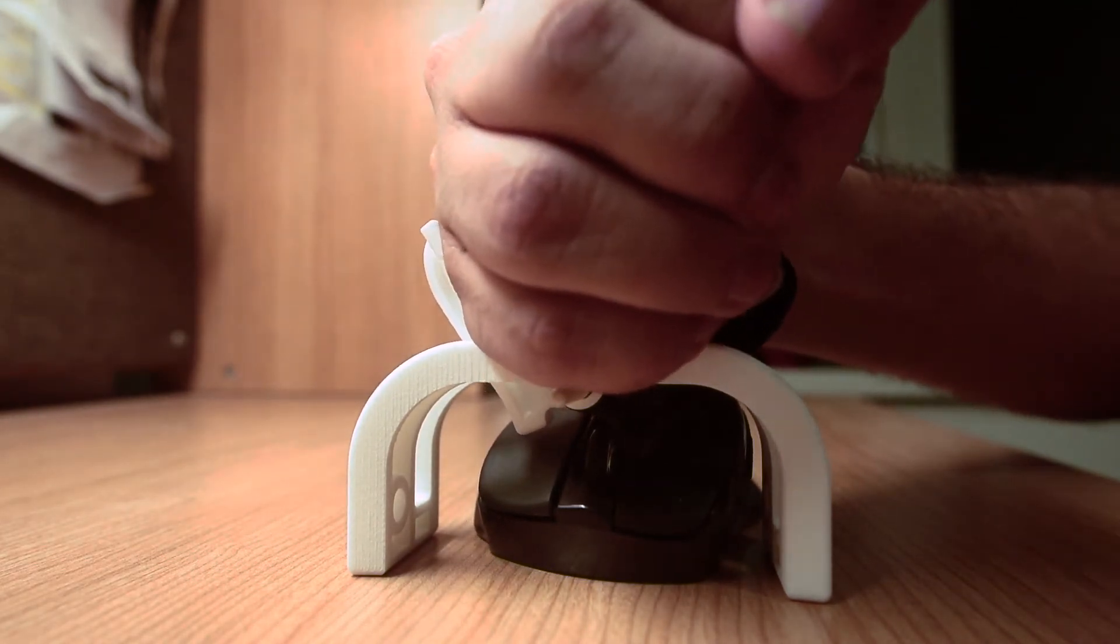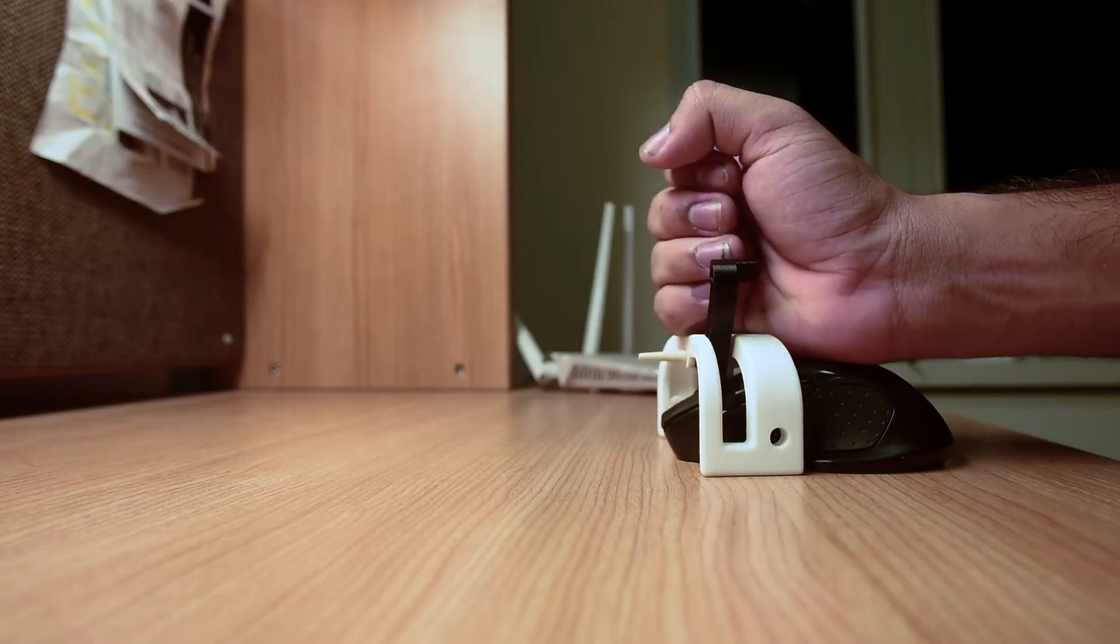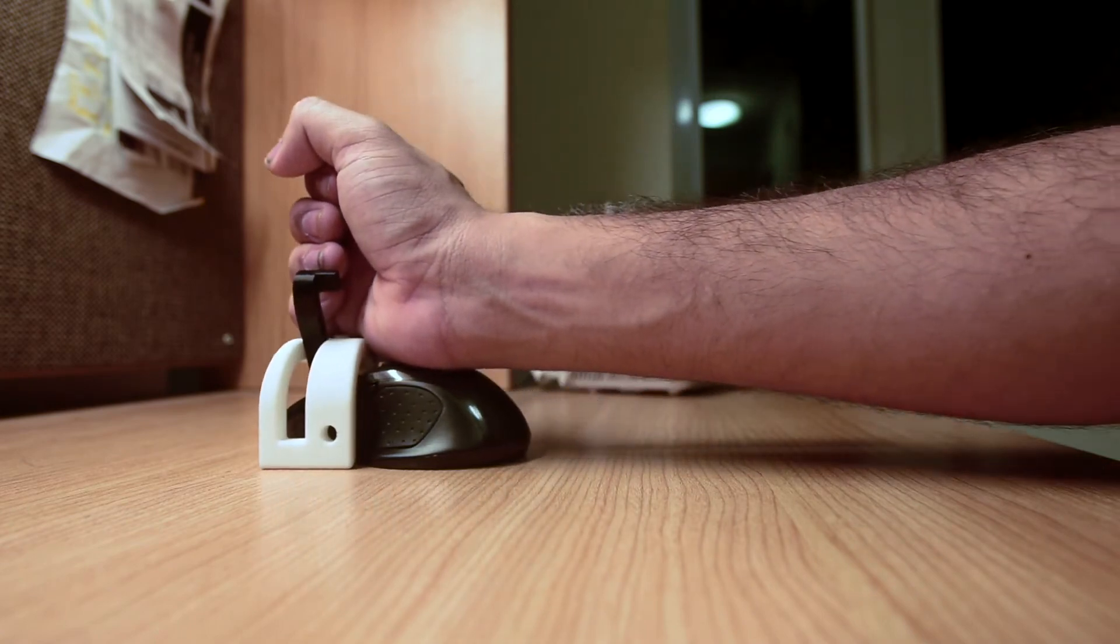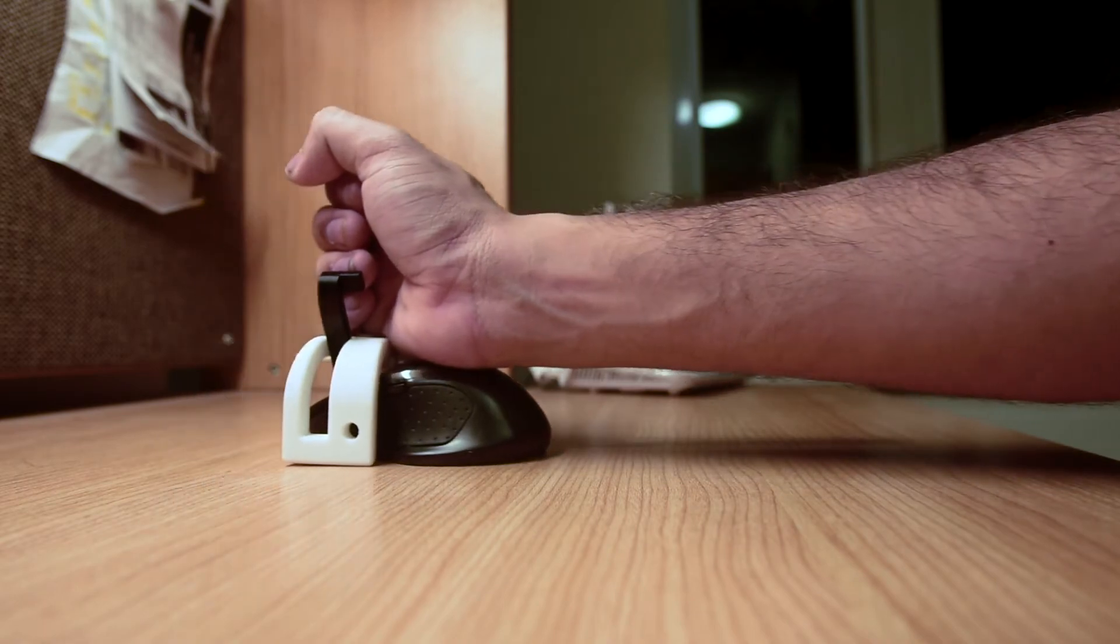One improvement that this device provides for Ken over his existing solution, a trackball, is that he is easily able to click and drag by tilting and moving his hand. This gives him the ability to interact with many types of software in ways he could not before.